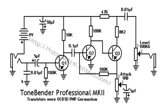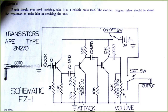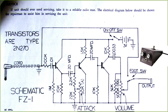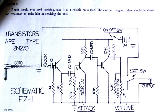The ToneBender isn't the only way to make a fuzz circuit out of three transistors. This is the Maestro FZ1 Fuzz Tone, which to my knowledge is the first commercial fuzz circuit. It just consists of three separate transistor stages without any feedback between the stages. The first is just a voltage buffer — an emitter follower — so this doesn't have the input impedance issues of the Fuzz Face. The next two stages are two common emitter amplifiers without any emitter degeneration. The attack control changes the biasing of the second stage and hence changes the gain. This was used by Keith Richards on the Rolling Stones song "Satisfaction."